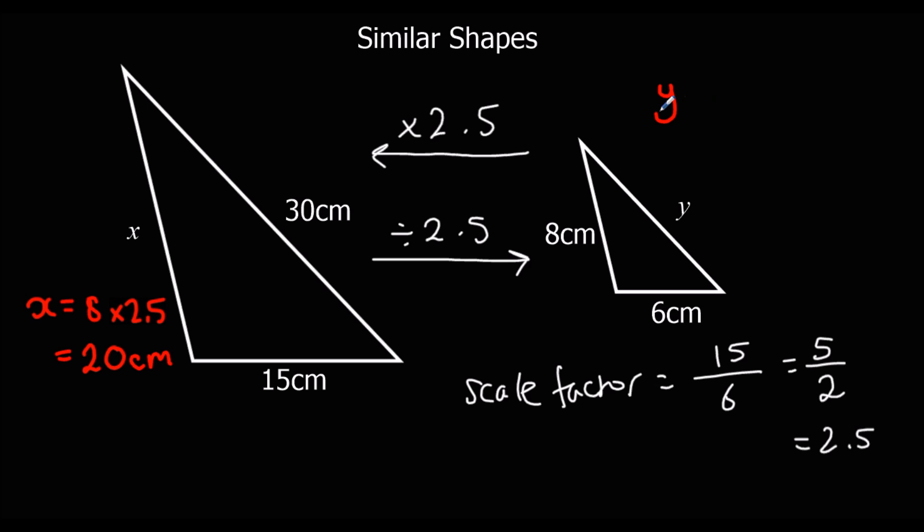And to find the y value, it makes 30 divide by 2.5. And it might be easy to double them first. So it's 60 over 5. And 60 over 5 is 12, so 12 centimeters.